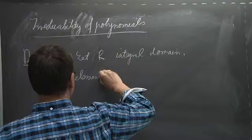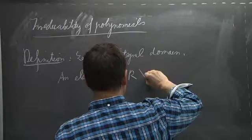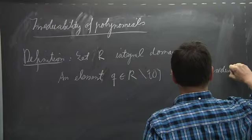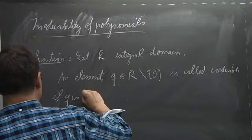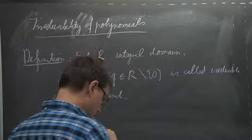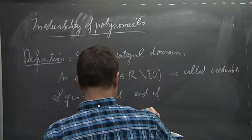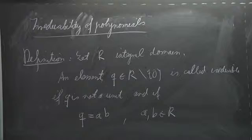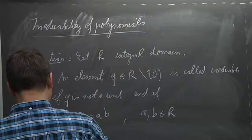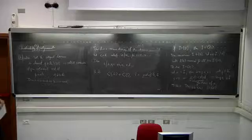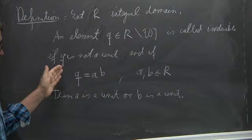Formally: a nonzero element Q in R which is not a unit is called irreducible if whenever Q equals A times B with A, B in R, then either A or B is a unit. It is called reducible if it is not irreducible.